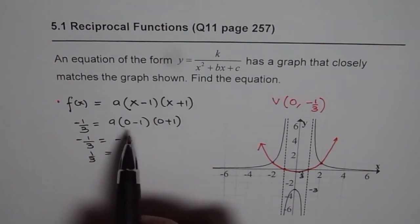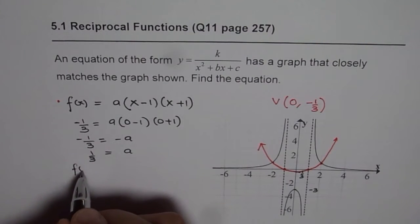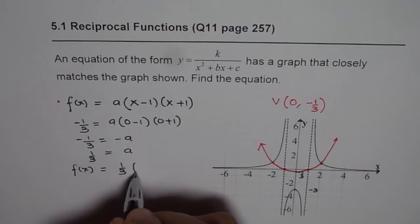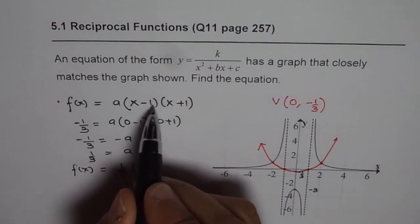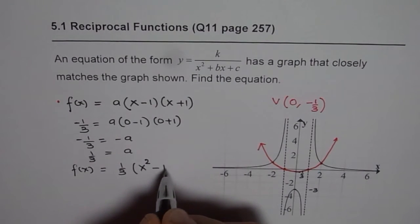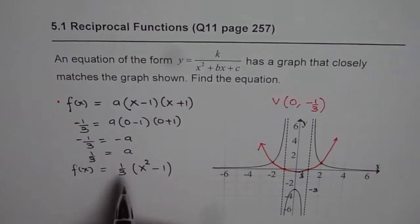So we get our function, which is f of x equals 1 over 3 times, now what is x minus 1 times x plus 1? It is x square minus 1. We can expand and always find it. So that is the function.